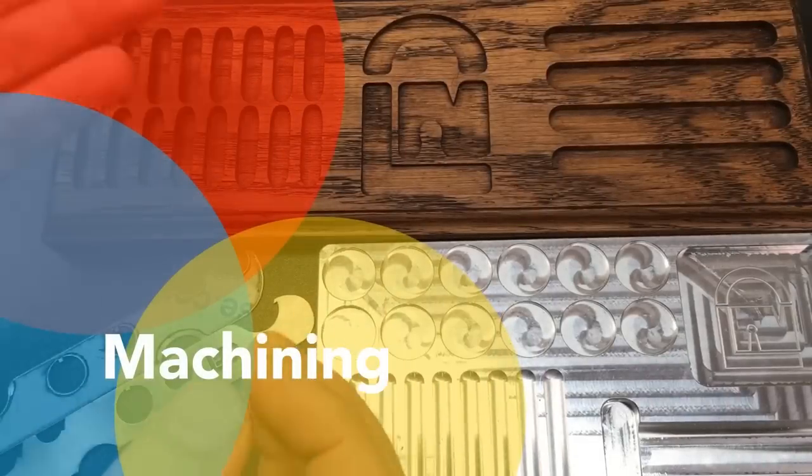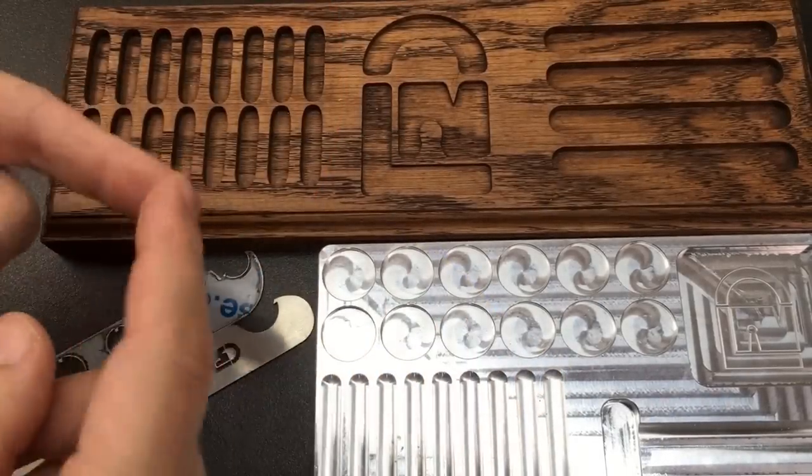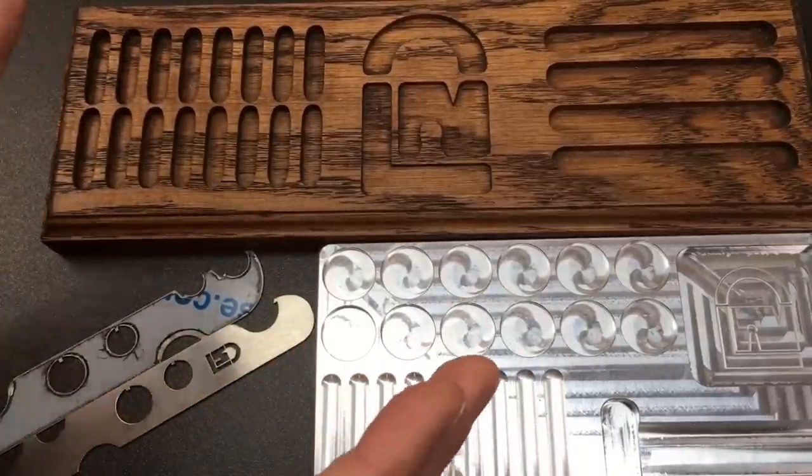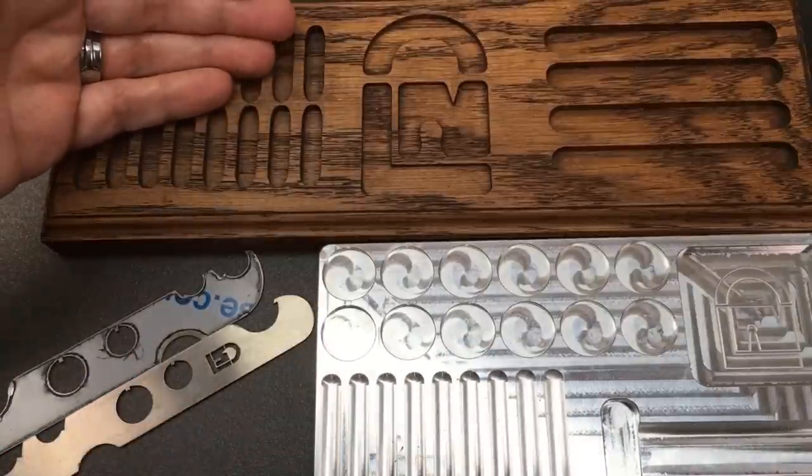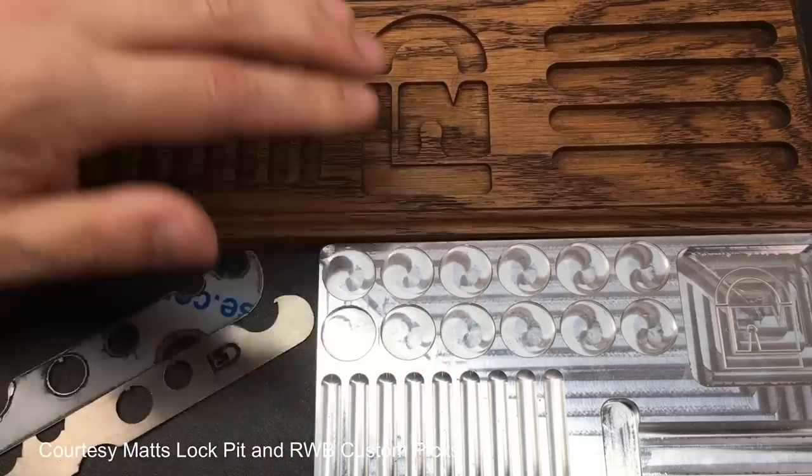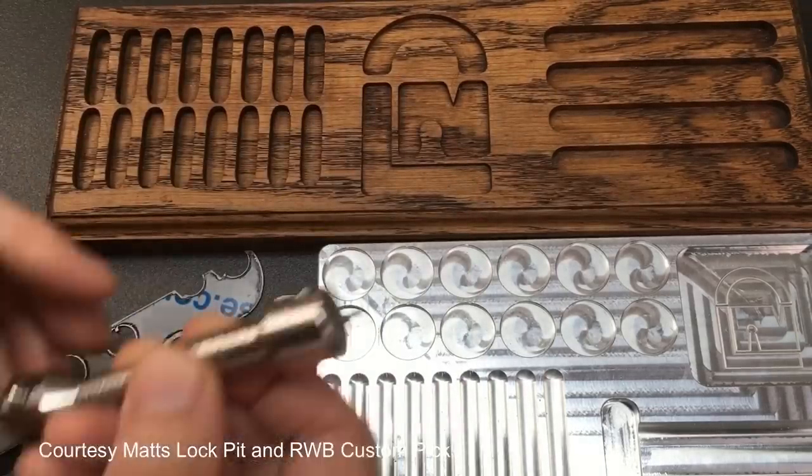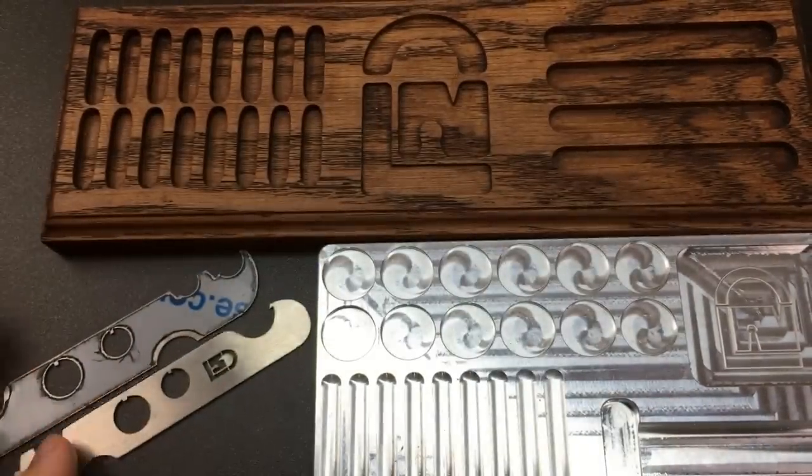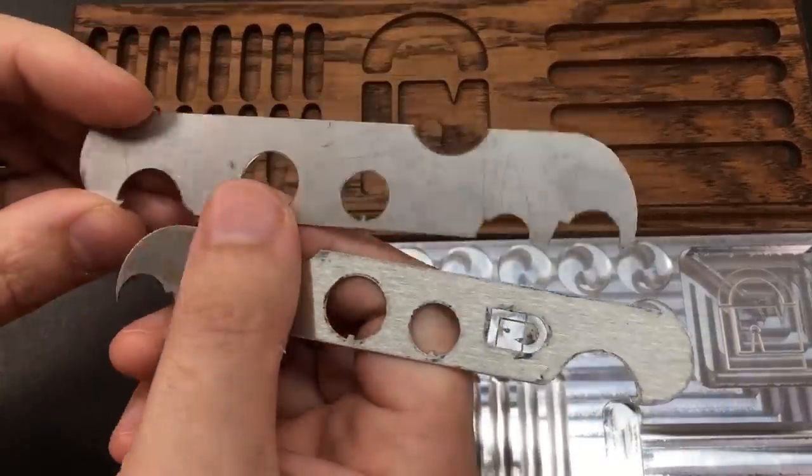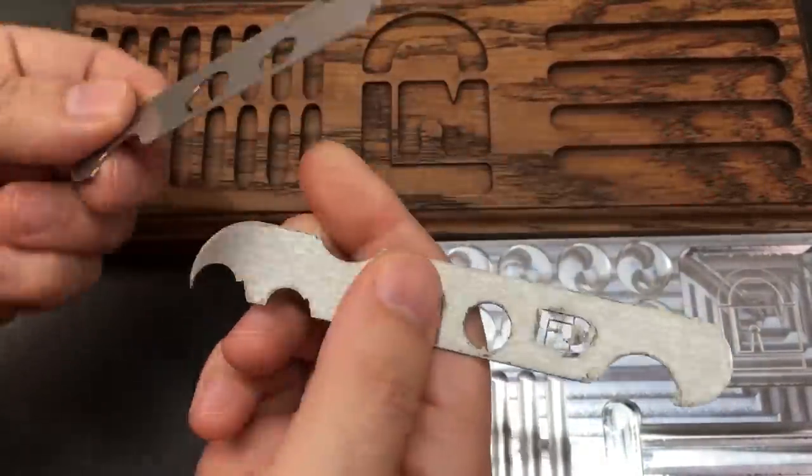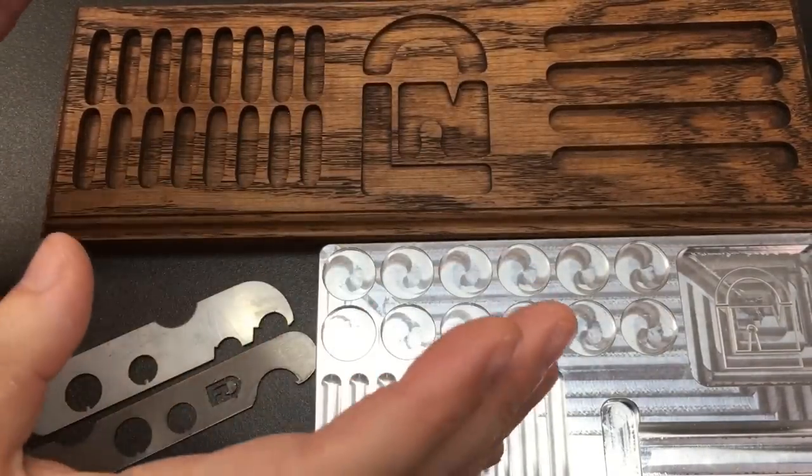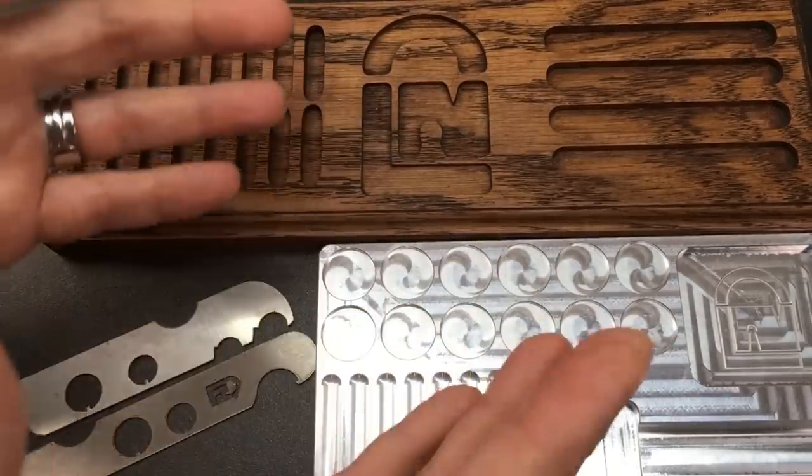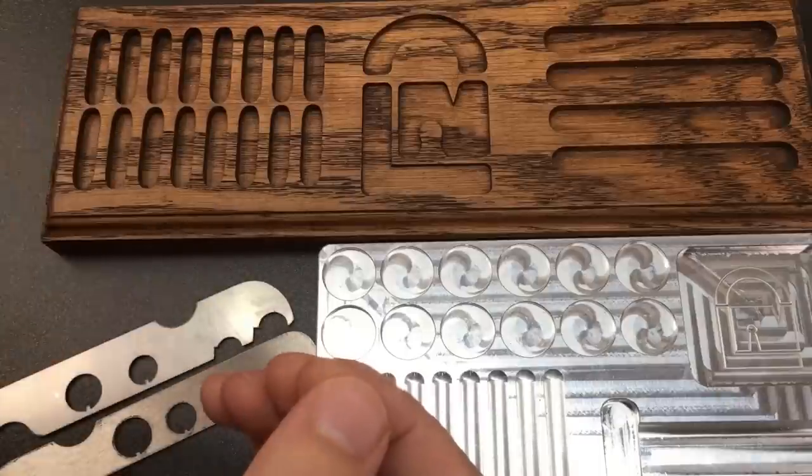If you have access to a makerspace or machine shop with mills and lathes, maybe some CNC tools and laser cutters, it's amazing what you can start to make as a lock picker. Just for example, here we have some milled pinning trays in wood and aluminium. If you had a metal lathe, you can start to make disk detainer picks. Here we have two prototype tools that I use a laser cutting service to produce. It really is a bit more of an advanced skill and hobby to get into this kind of more advanced machining, but again the rewards can be really epic.